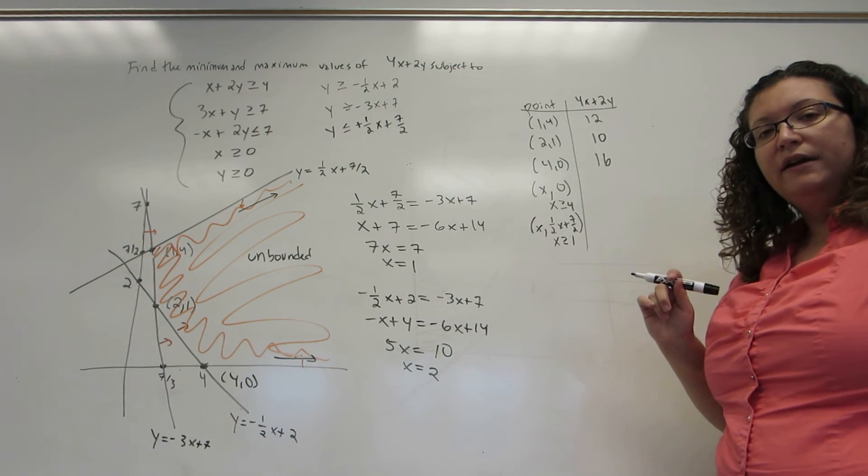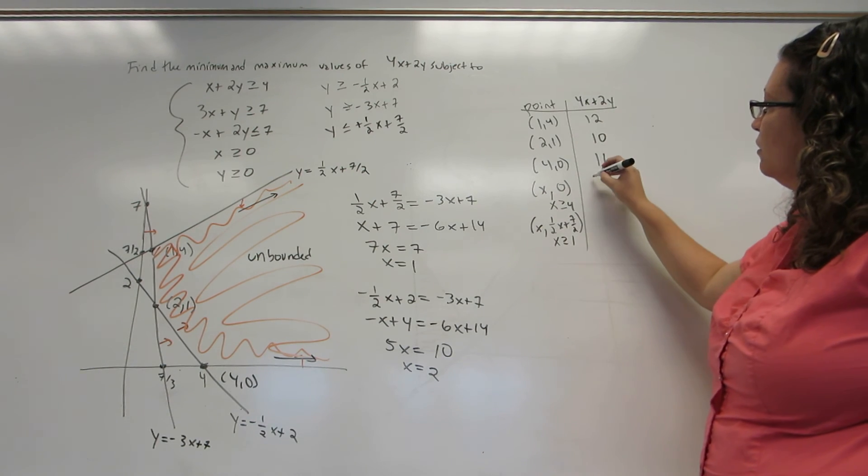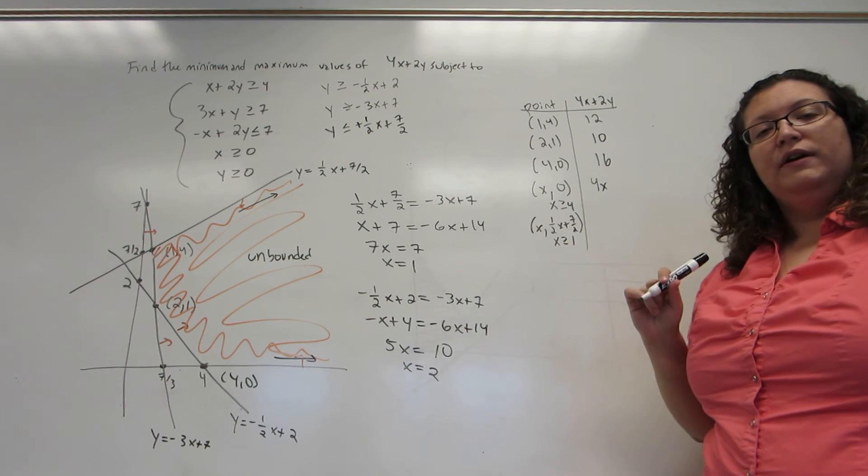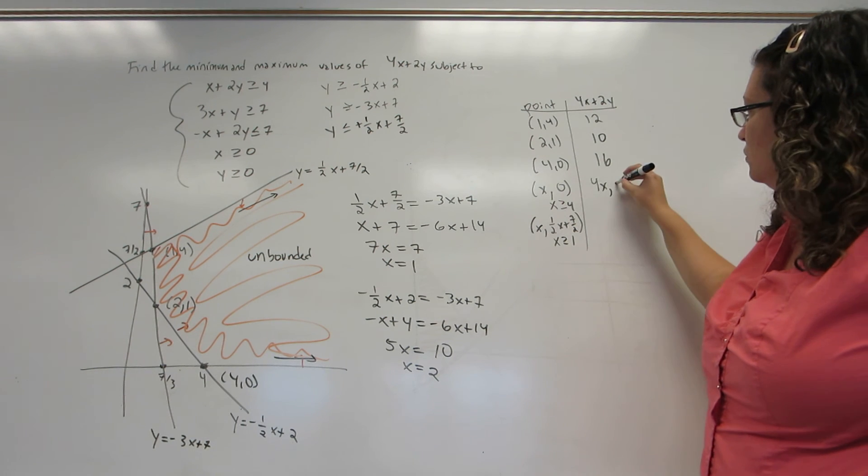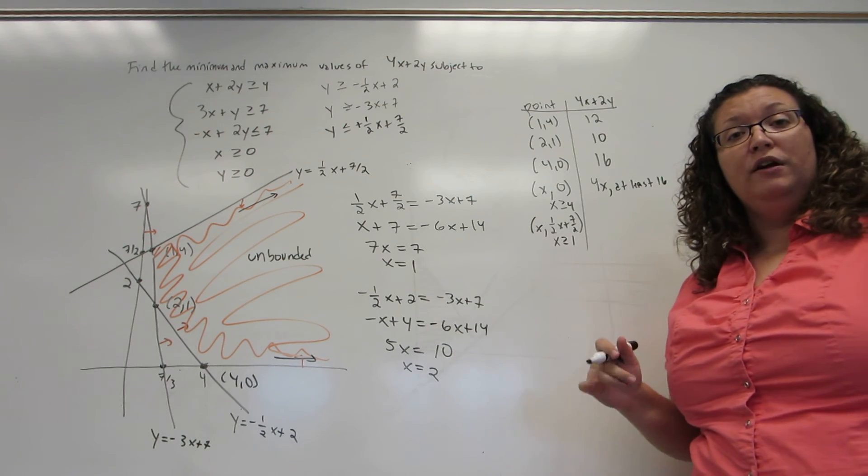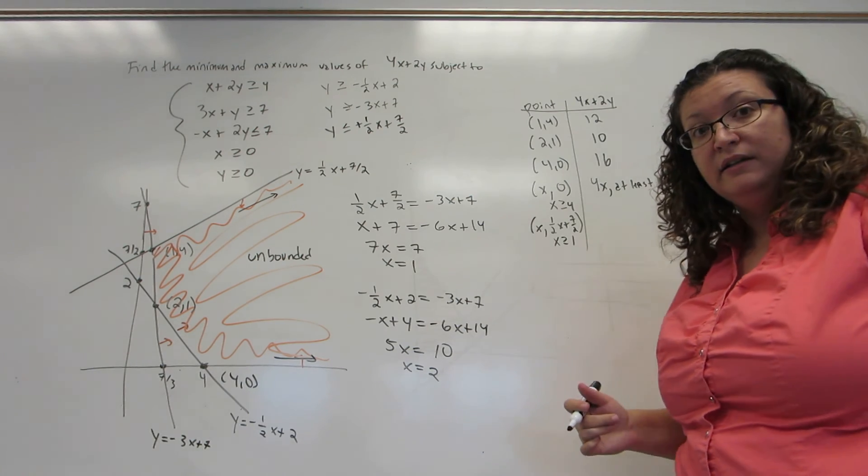Now these latter two are a little bit interesting. Plugging in X comma 0, I get 4X. But the smallest value of X I'm plugging in is 4, so this is at least 16. And it's going to keep on getting bigger from there because I'm allowed to plug in as big an X as I want.